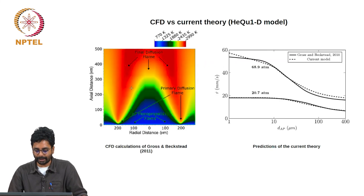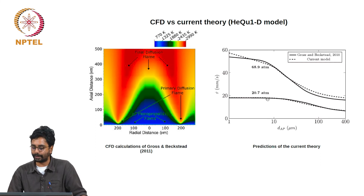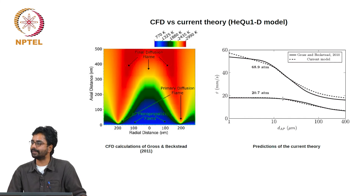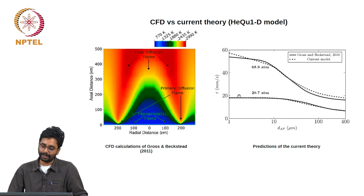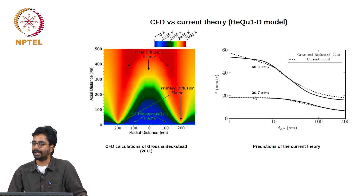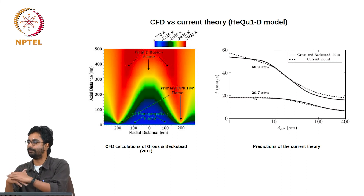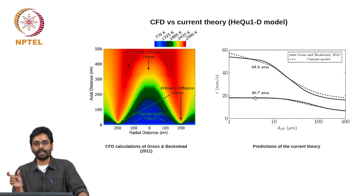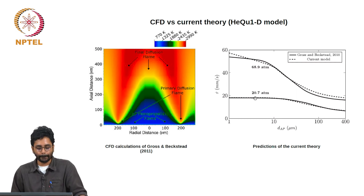You can clearly see that here. Looking at predictions as a function of particle size at 20.7 atmospheres — once you reach about 20 microns, irrespective of how small you go, the burn rate remains the same because they are all controlled by the same premixed flame. All these particles are called fine AP particles and they are homogenized with the binder, in addition to the particles that are extinct.